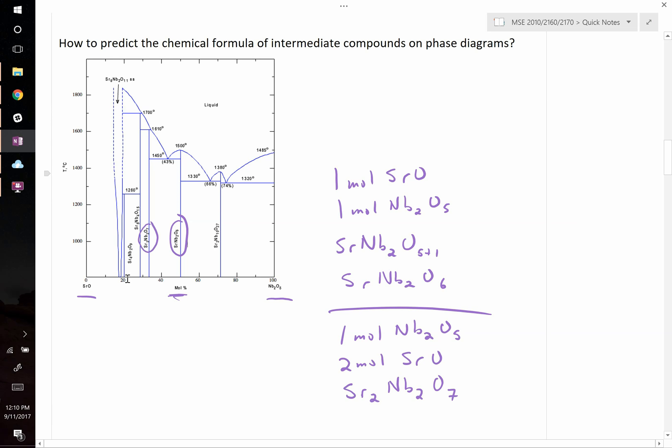Same thing at 20%. 20% corresponds to one-fifth, so you have a one to five ratio. For every one mole of Nb2O5 you have four moles of SrO, and sure enough you end up with Sr4 Nb2O9. So if it's plotted in mole percent, that's the easy way to do it.